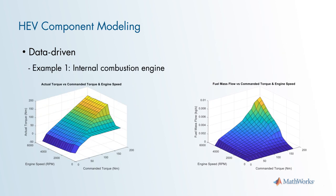An example of a data-driven model is a map-based internal combustion engine. For system-level simulation, modeling in-cylinder combustion dynamics is not necessary. Maps such as commanded torque versus engine speed and actual torque, or commanded torque versus engine speed and fuel mass flow, can be used. These models provide good accuracy for system-level simulation and also have the benefit of simulating quickly.